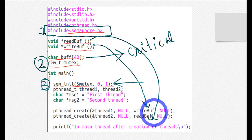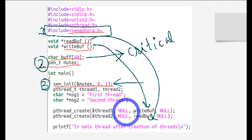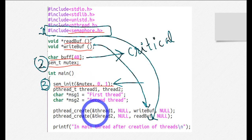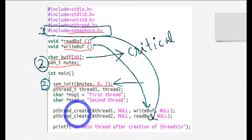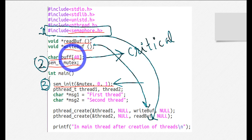You can easily guess what's happening. The first thread will write into the character array buff, and the second thread will try to read from it. I have to make sure they don't do it at the same time. Since threads run in parallel, they will both try to use this critical section simultaneously, and I have to prevent that.